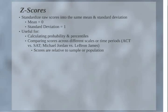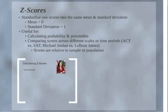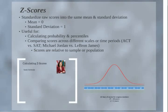Z-scores are useful for calculating probability and percentiles. Another great thing about them is you can compare scores across different scales or different time periods, because they compare scores relative to a current sample or population. For example, if you took the SAT and I took the ACT, we could compare our relative scores by converting them to z-scores. Similarly, we can compare scoring percentages for Michael Jordan versus LeBron James using z-scores, even though they never played together.